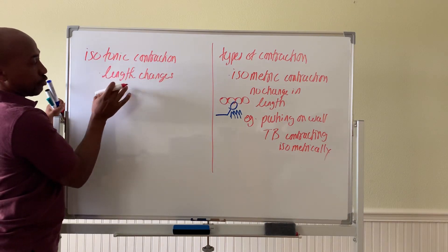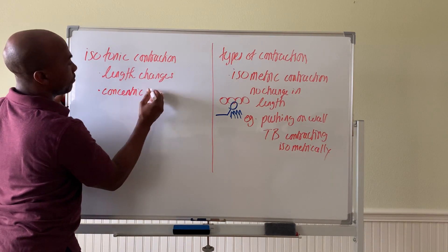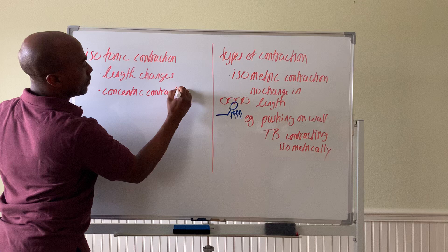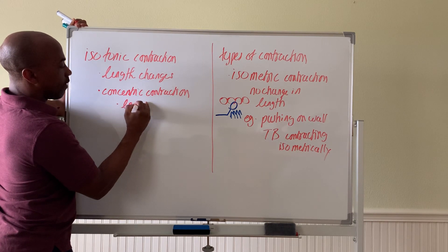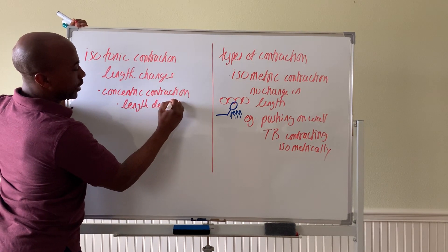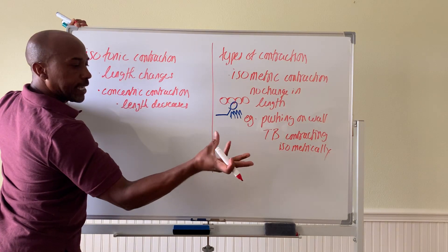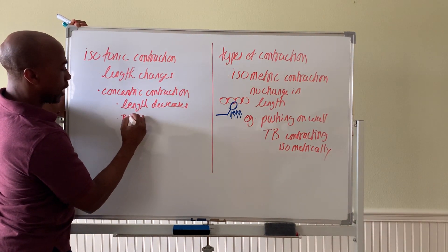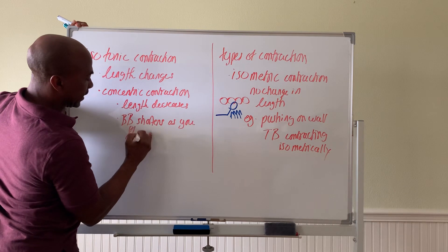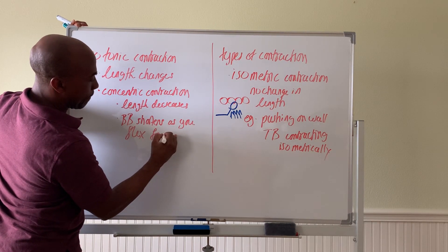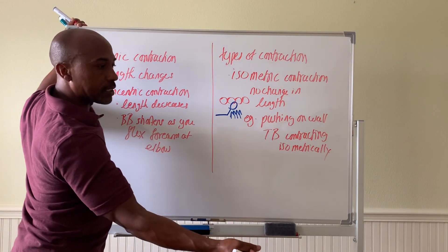The first form is called concentric contraction, where the muscle length shortens — the length of the muscle decreases. For example, when you flex the forearm at the elbow, the biceps brachii shortens. That is an example of concentric contraction.